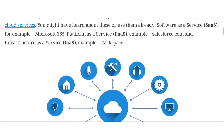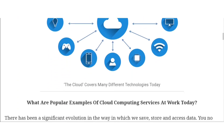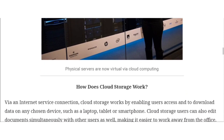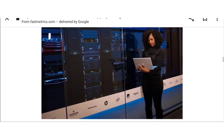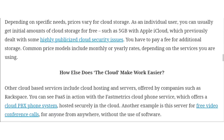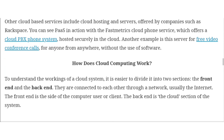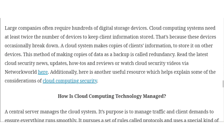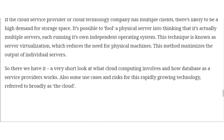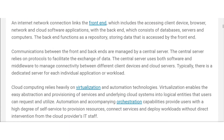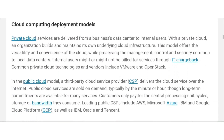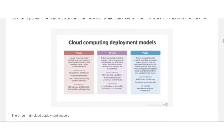Cloud computing can be separated into three general service delivery categories. IaaS providers such as Amazon Web Services supply a virtual server instance and storage, as well as APIs that let users migrate workloads into a virtual machine. Users have allocated storage capacity and can start, stop, access and configure the VM and storage as desired. IaaS providers offer small, medium, extra-large and memory or compute optimized instances, enabling customization for various workload needs.